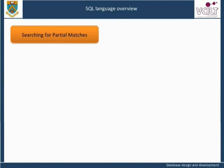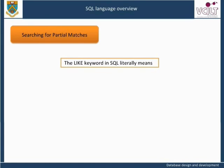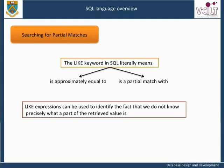Searching for partial matches. All of the queries we have seen so far have been to retrieve exact matches from the database. The LIKE keyword allows us to search for items for which we only know a part of the value. The LIKE keyword in SQL literally means 'is approximately equal to' or 'is a partial match with.' The keyword LIKE is used in conjunction with two special characters which can be used as wildcard matches — in other words, LIKE expressions can be used to identify the fact that we do not know precisely what a part of the retrieved value is.